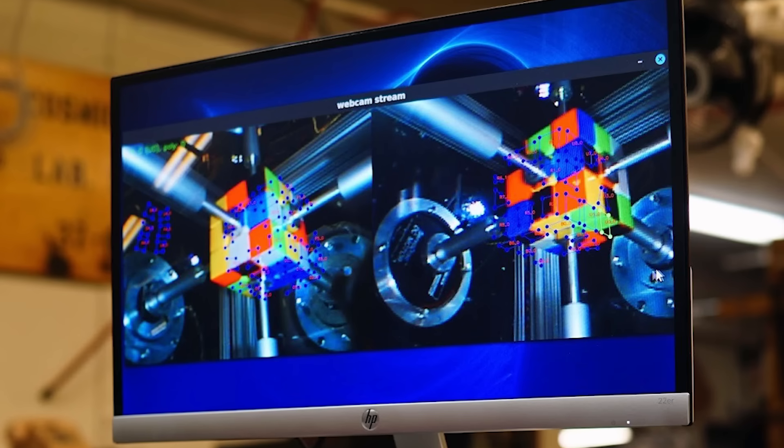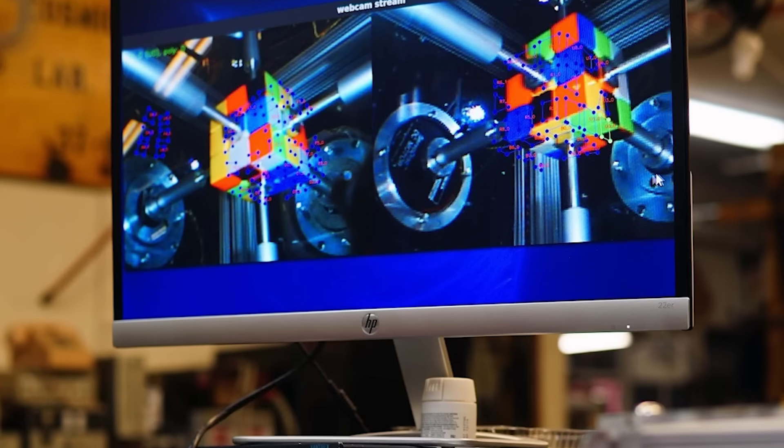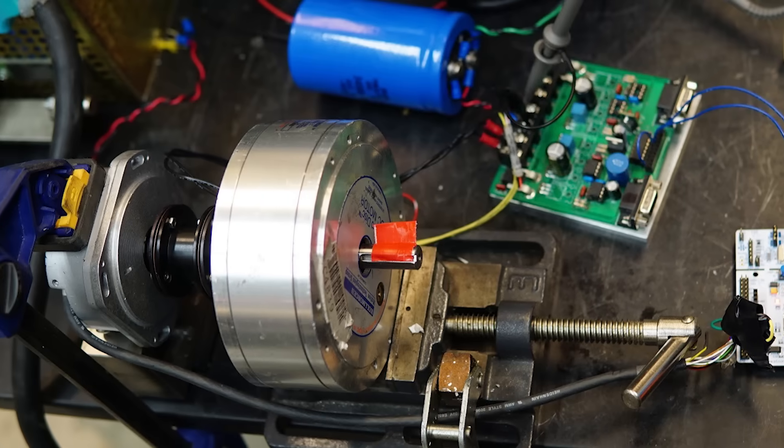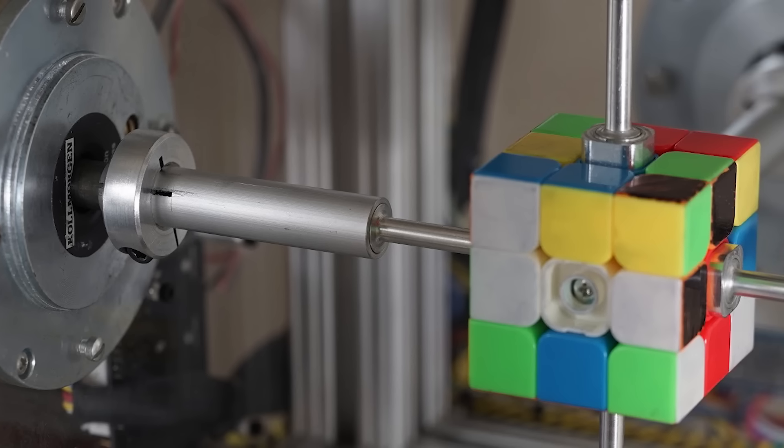A special software was developed to identify all the colors, build a description of the cube, and pass it to the MIN2 phase solver, which implements Kosiemba's two-phase algorithm.